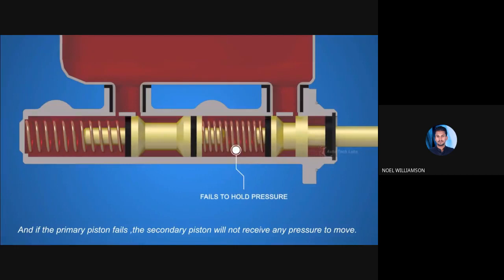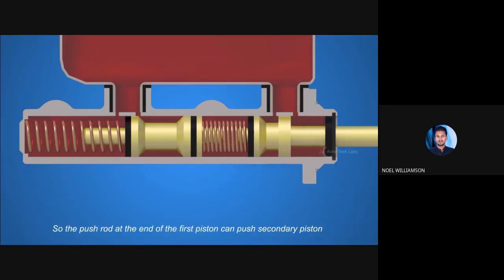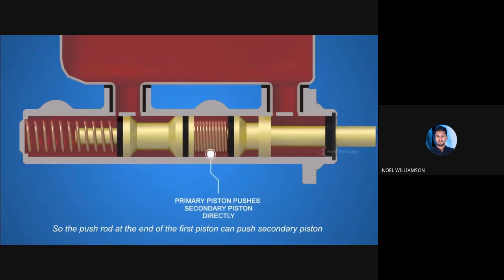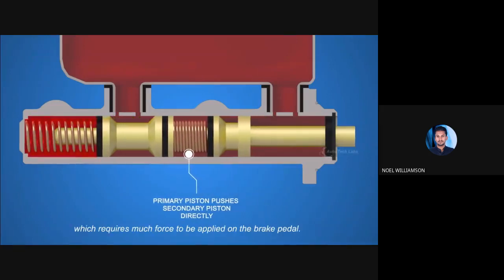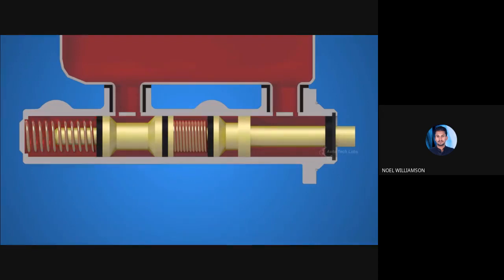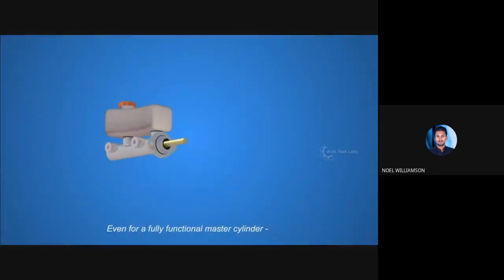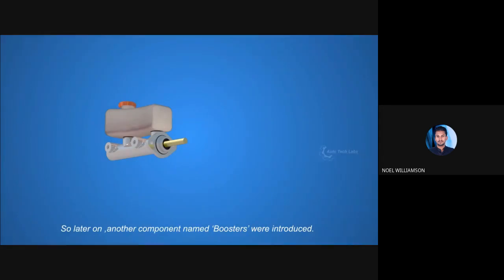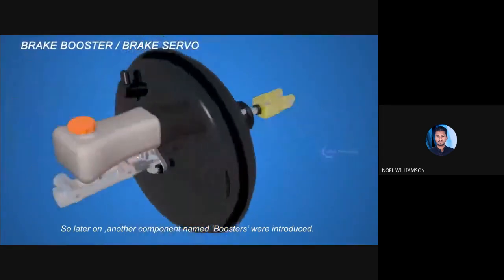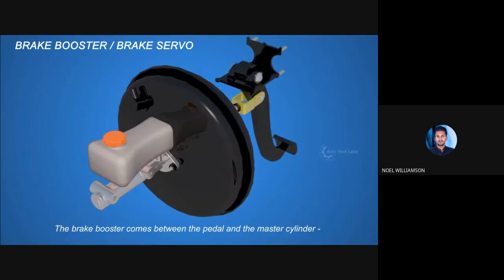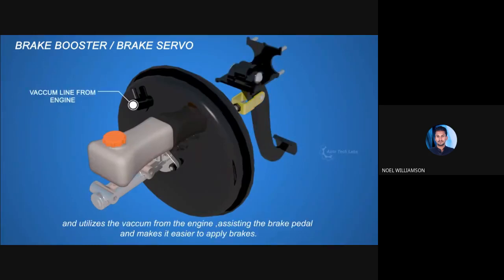In case the secondary piston fails to build up pressure, the primary piston can still develop pressure with increased travel. If the primary piston fails, the push rod at the end of the first piston can push the secondary piston directly, but this requires much more force on the brake pedal. Even for a fully functional master cylinder, pushing the pistons through the brake pedal requires significant force. So another component, named boosters, was introduced.